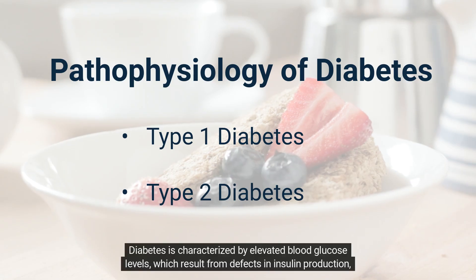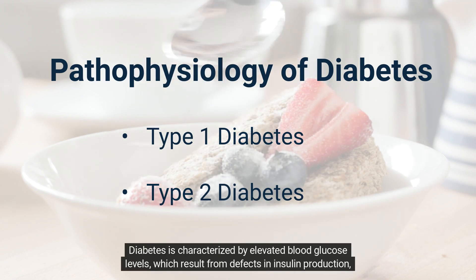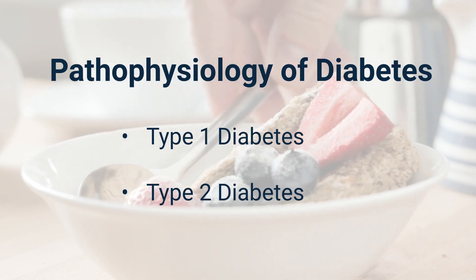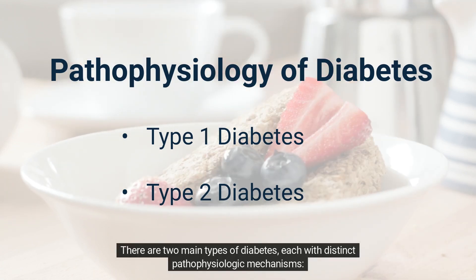Diabetes is characterized by elevated blood glucose levels, which result from defects in insulin production, insulin action, or both. There are two main types of diabetes, each with distinct pathophysiologic mechanisms.